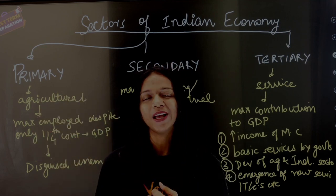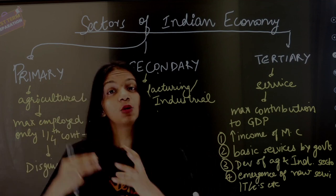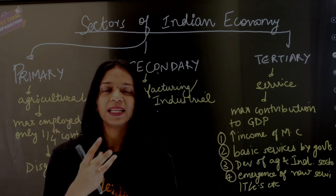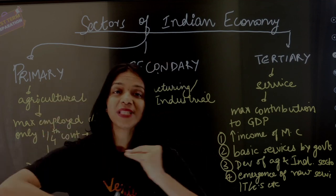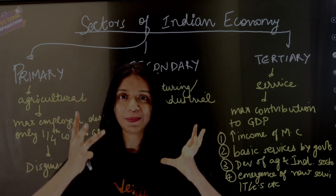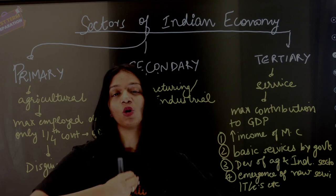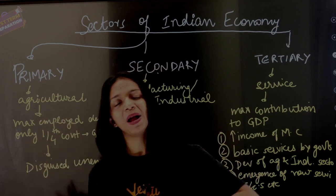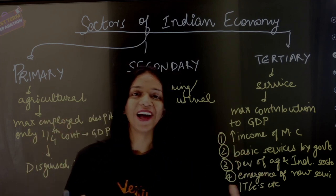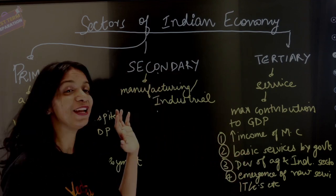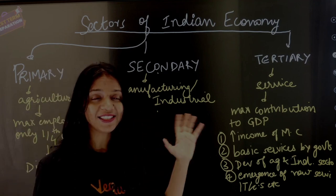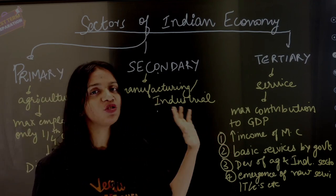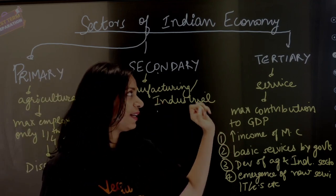Then you have the secondary sector, where you take the raw material from the primary sector and you process it in a factory and manufacture it into a processed product — like cotton into a cotton t-shirt, or tomato into ketchup. Since it is done in a factory or industry, it is called the industrial sector and also the manufacturing sector.